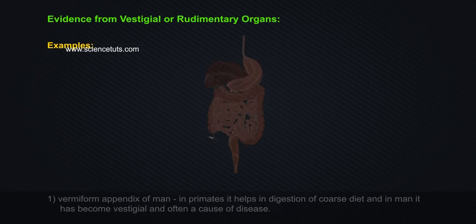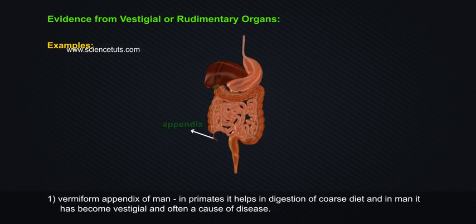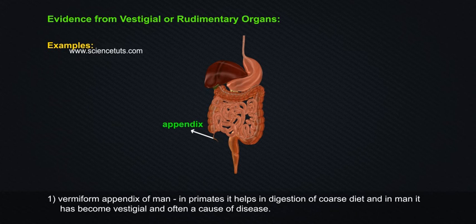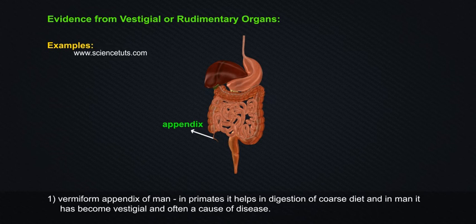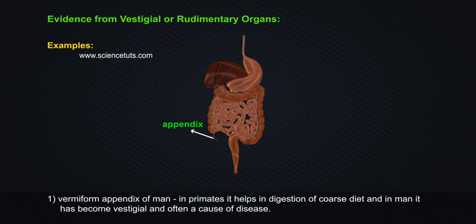Example 1: Vermiform appendix of man. In primates, it helps in digestion of coarse diet. In man, it has become vestigial and is often a cause of disease.